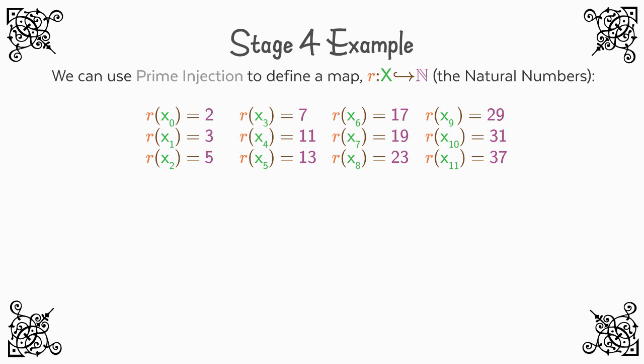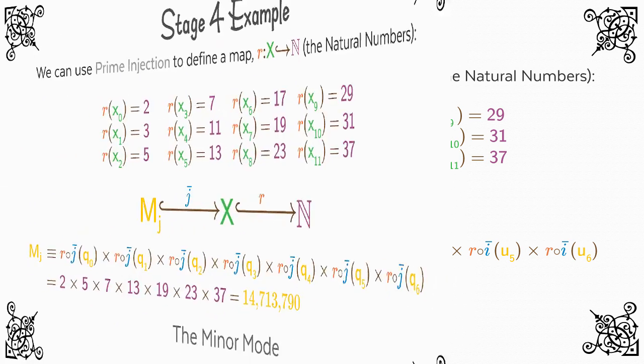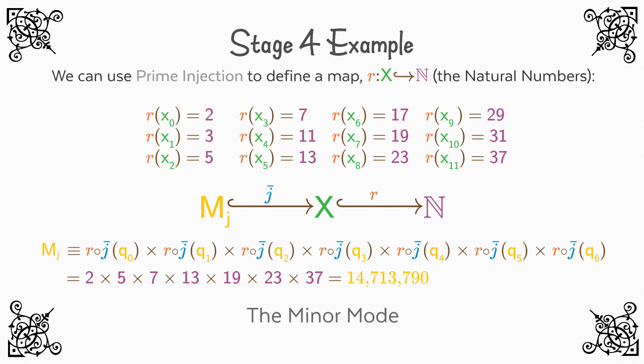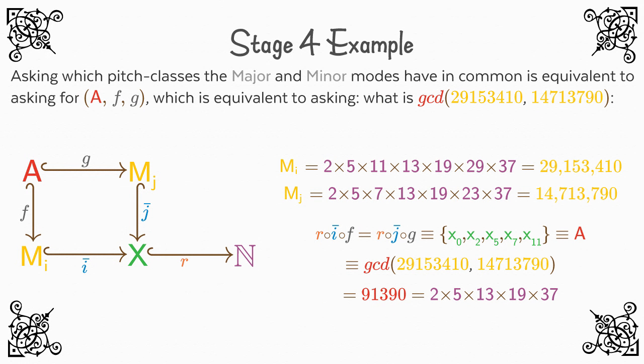In stage four, using prime injection and the fundamental theorem of arithmetic, we can design an algorithm that closely mirrors the formulation. For example, we can define a monic map from X to N, the natural numbers that associates the Nth prime with the Nth element of X, so that the major mode, for example, can be represented by the unique integer 29,153,410, and the minor mode by 14,713,790. Asking what are all the pitch classes they have in common is equivalent to asking the identity of the set A, which is equivalent to asking in this formulation, what is the greatest common divisor of 29,153,410 and 14,713,790.